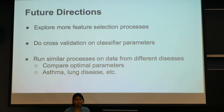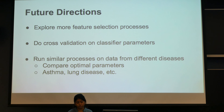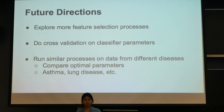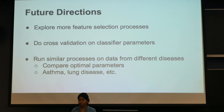For future work, we didn't tune the classifier parameters much — for example, random forest parameters like bootstrap size or minimum leaf size. We want to perform cross-validation on the classifier parameters. If time allows, we also want to explore more feature selection processes, see how this technique performs on other diseases, and determine what the optimal parameters are.